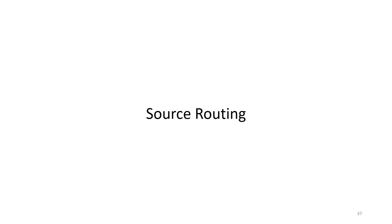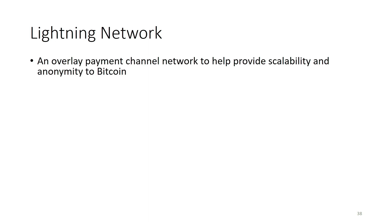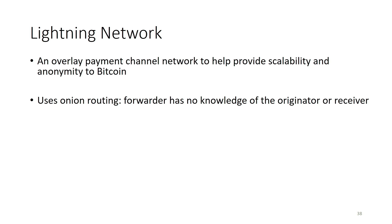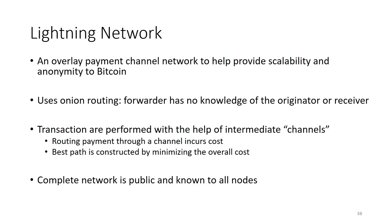Now switching to how we use this framework to evaluate source routing schemes. We consider the Lightning Network, which is an overlay payment channel network over Bitcoin providing scalability and anonymity. It uses onion routing to forward transactions such that no middle node knows who is the originator or recipient. Transactions are performed through channels, and each channel incurs some cost, so the idea is to select the best path from source to destination. Information about the network topology and hop costs is public and known to everyone.